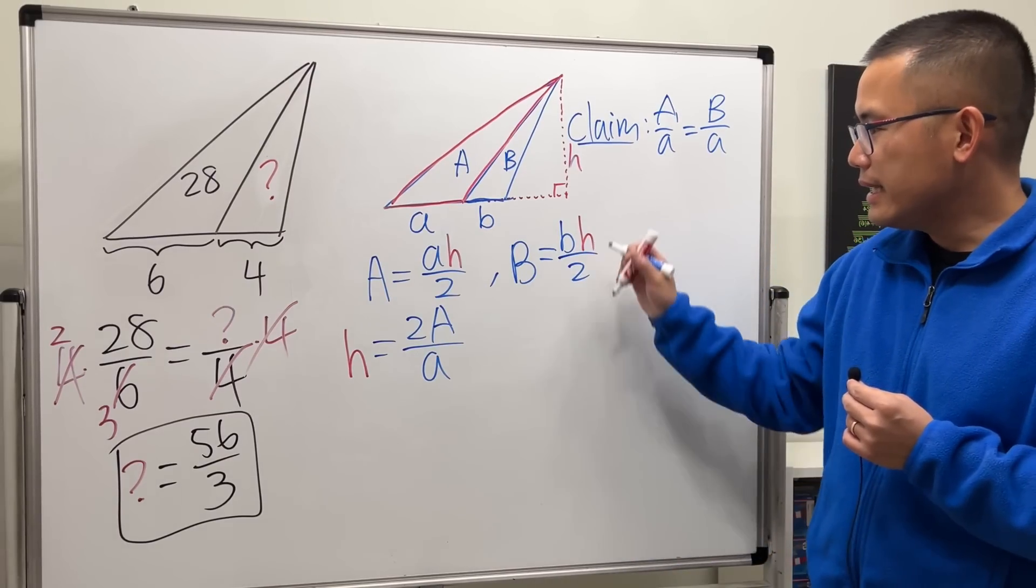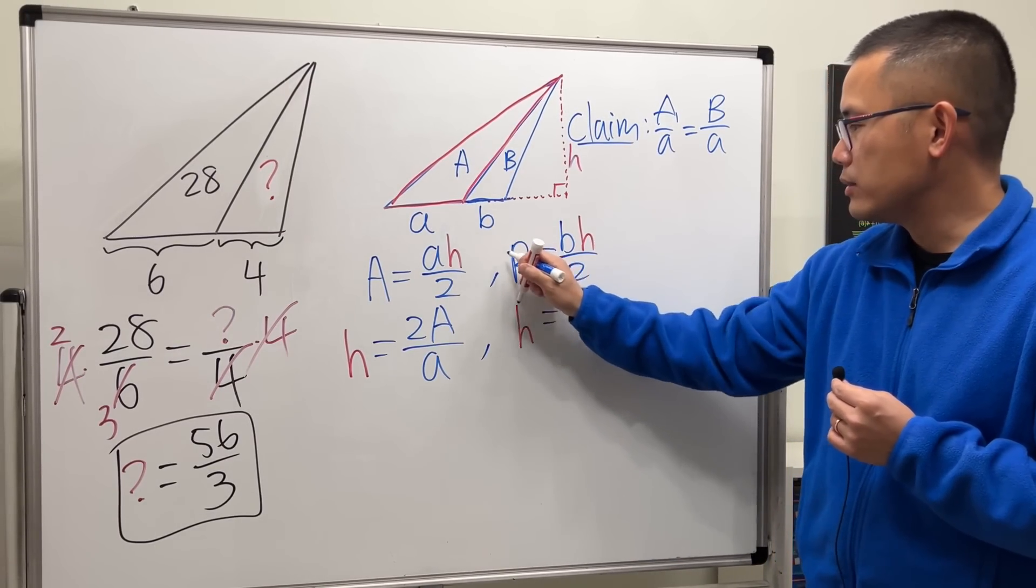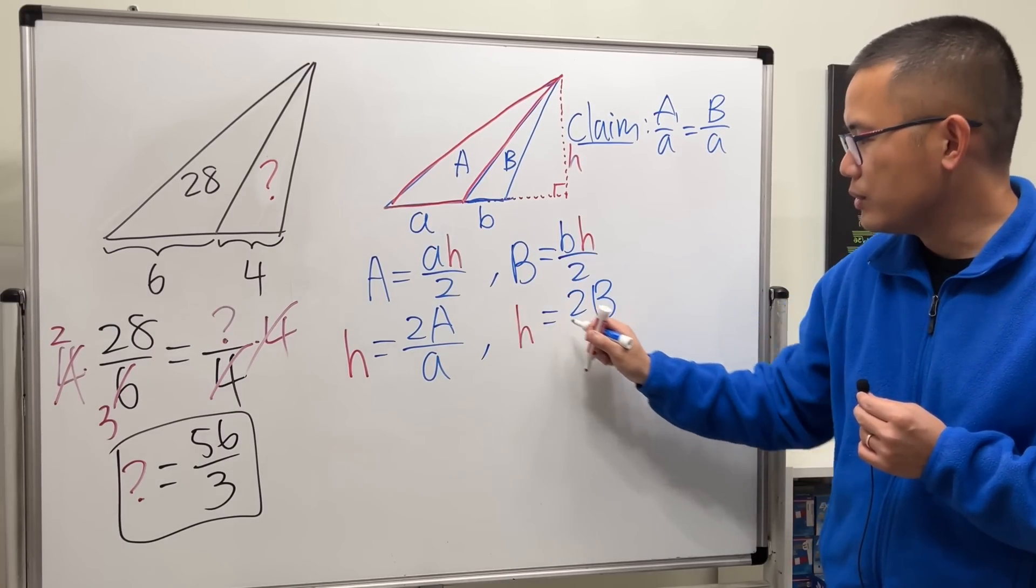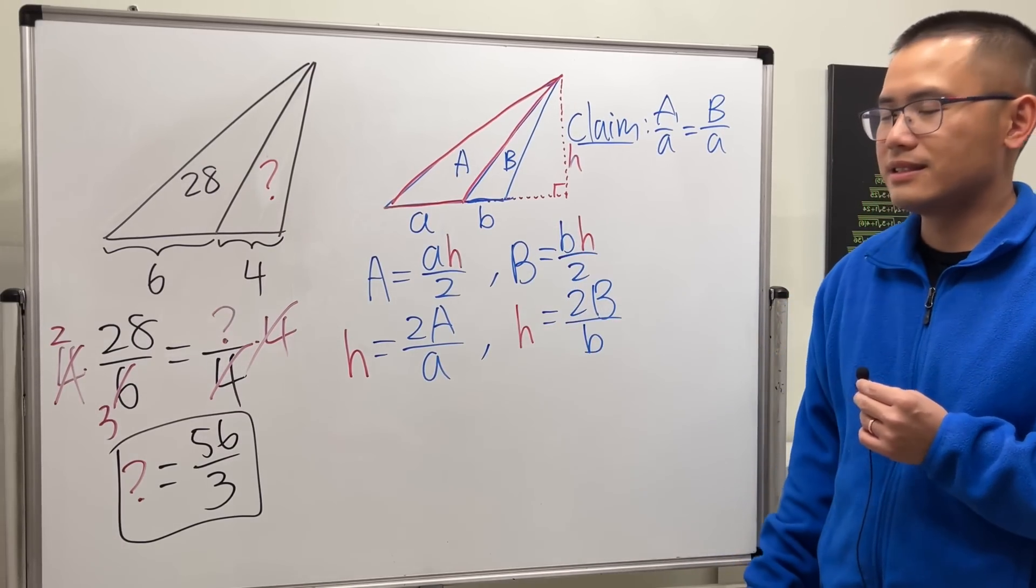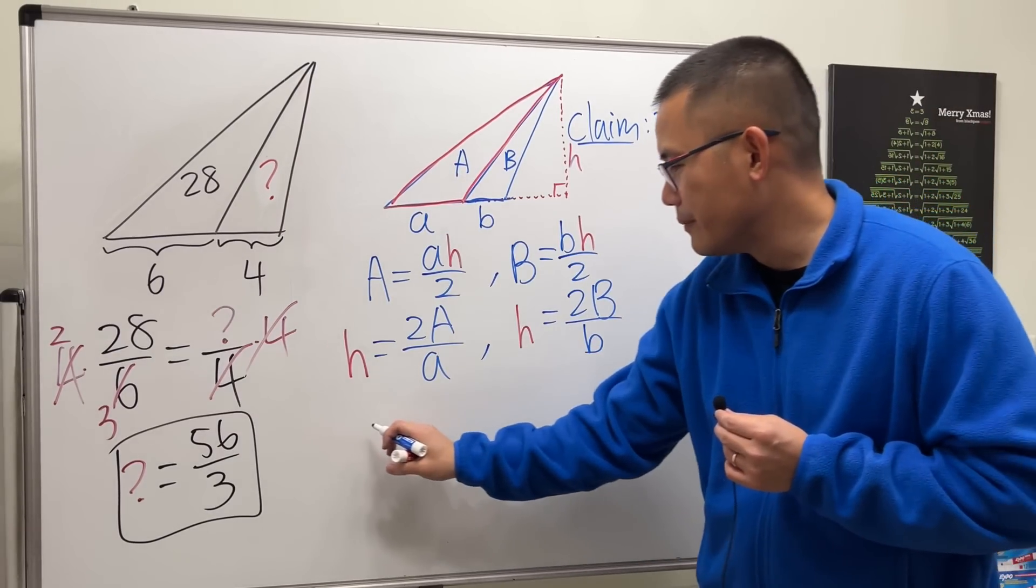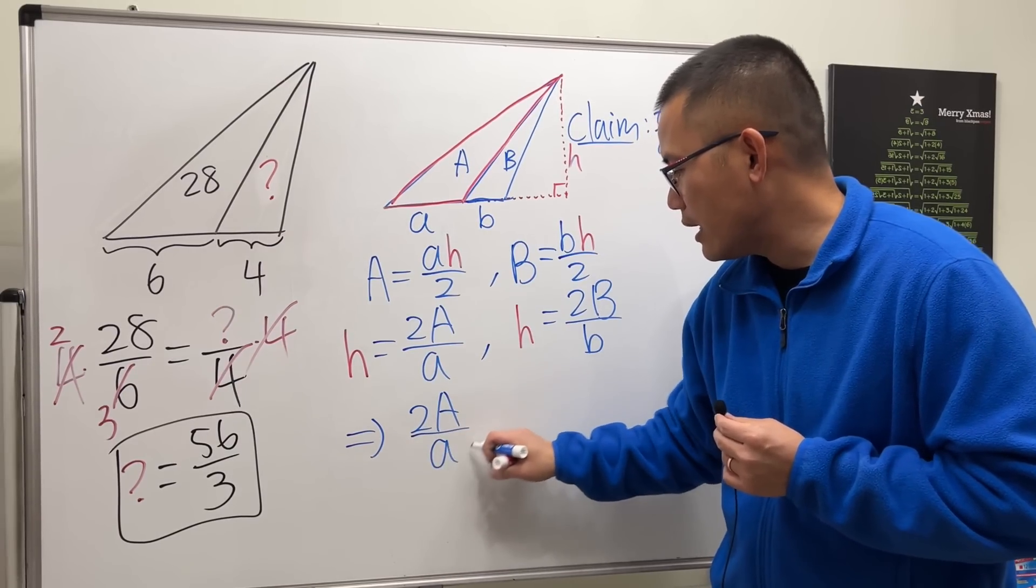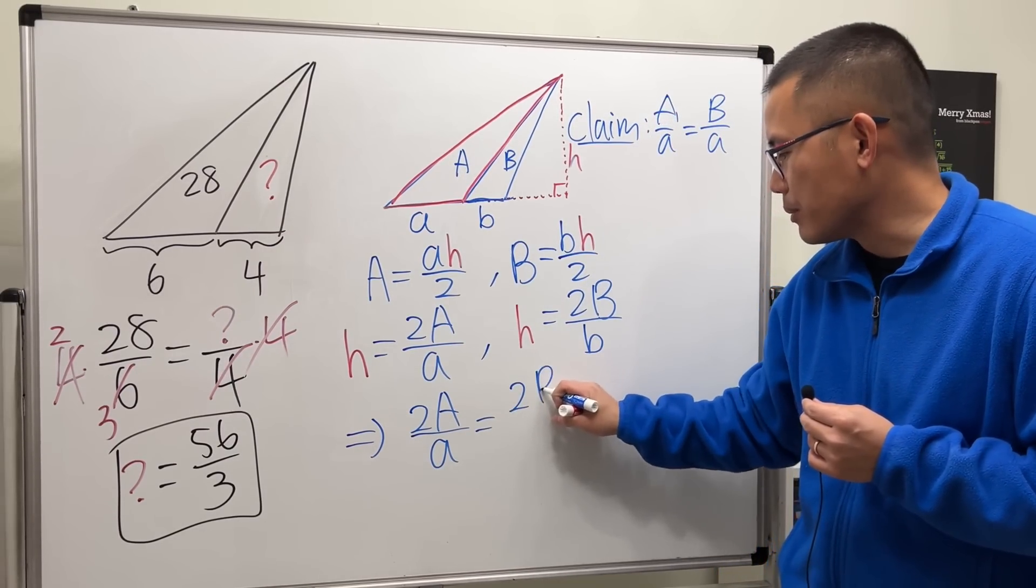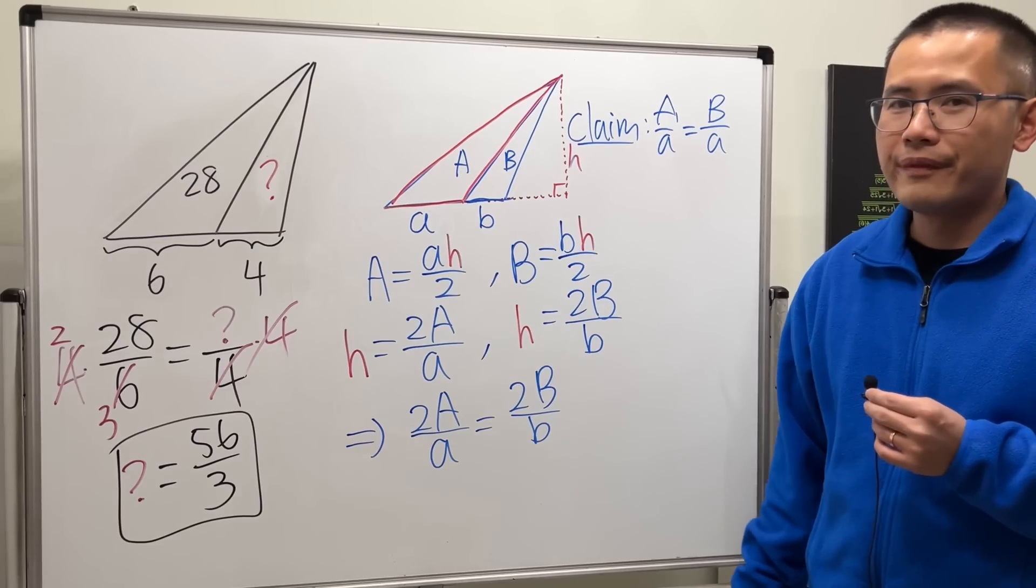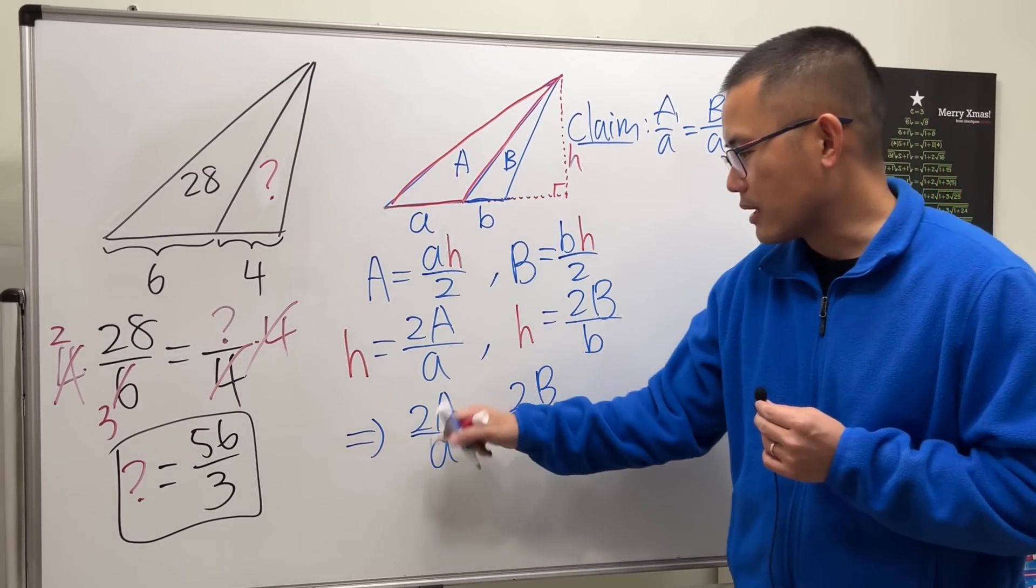And then right here when I do that, we'll multiply 2 to the other side, divide little b to the other side like this. This is h, that's h - they have to equal to each other. Therefore, you see 2 capital A over little a has to be 2 capital B over little b.